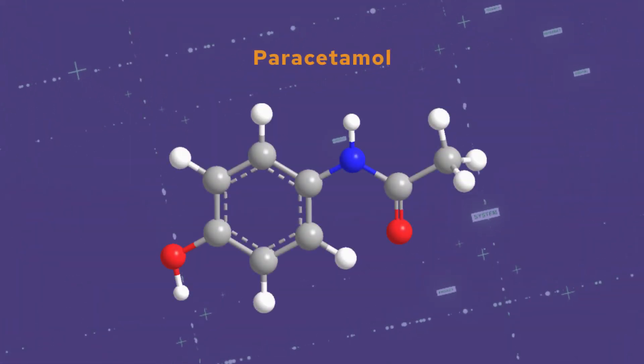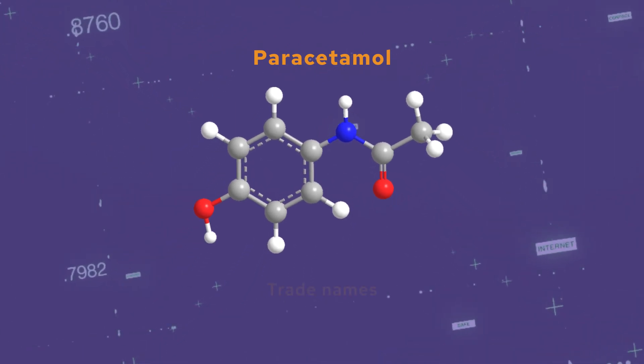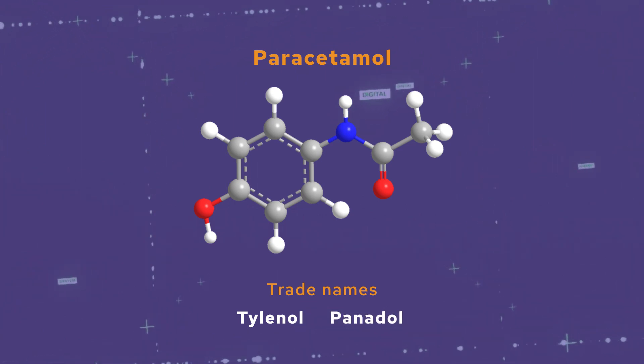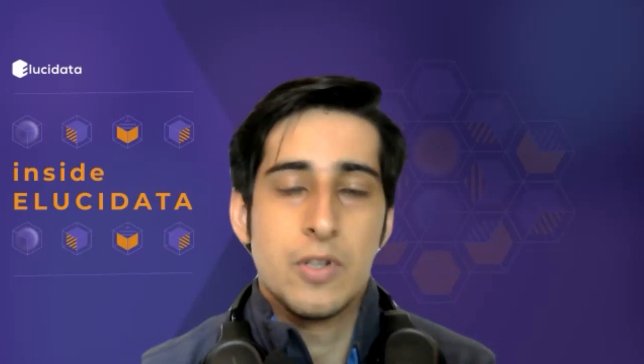Biomedical text is also very synonym-heavy — you see many words and phrases that refer to the same real-world concept. For instance, a drug like paracetamol could be referred to by that name or by one of its many trade names like Tylenol or Panadol. In many cases you can't simply look these keywords up in a predefined vocabulary; you need more sophisticated ways of mapping them to real-world concepts.